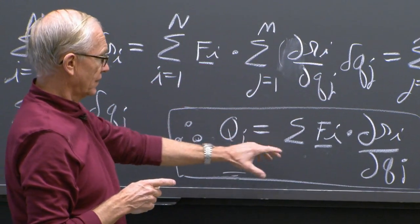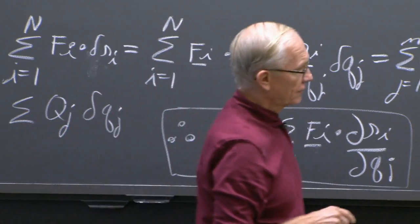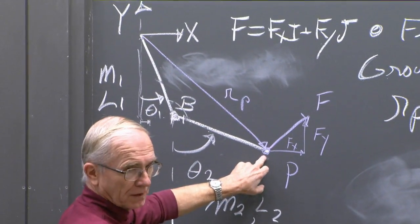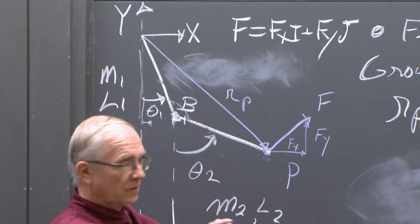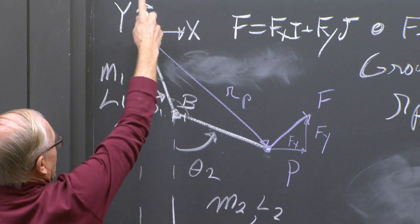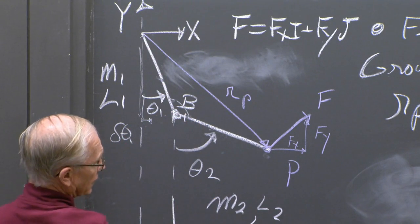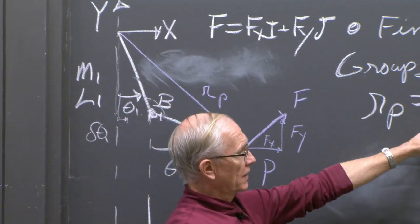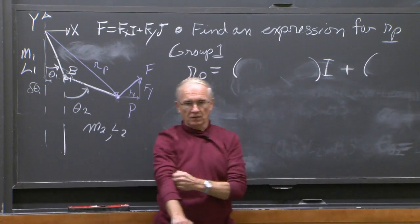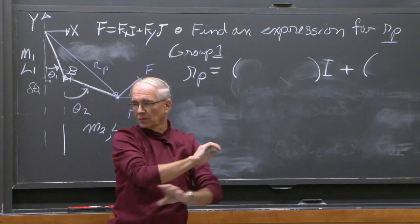Today's problem is easy in the sense that i equals 1 - you only have to deal with one force. You need r sub i; in this case here's point P. Work out what this vector r_P is in the system as drawn. Here's the inertial system x, y. Generalized coordinates theta_1, theta_2. This bar is l_1 long and this bar is l_2 long. Come up with an answer in the form: something in the i-hat direction plus something in the j-hat direction. Each group, come put your answer up and then we'll move on.